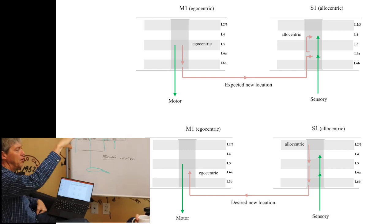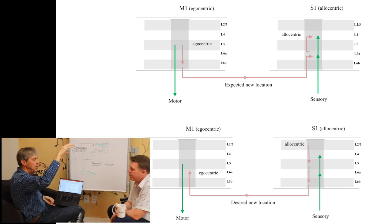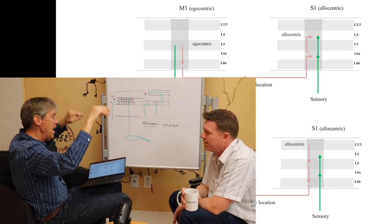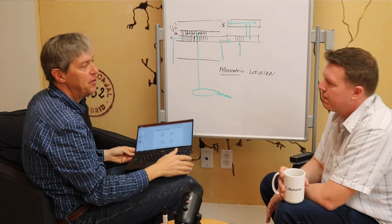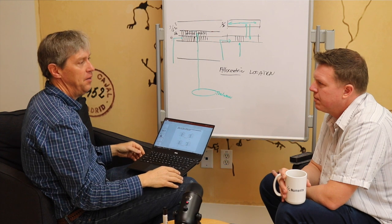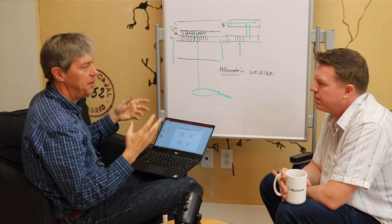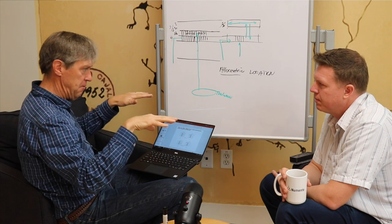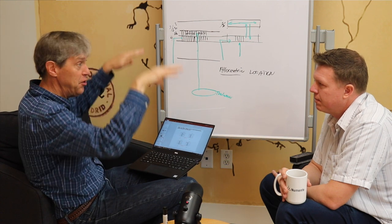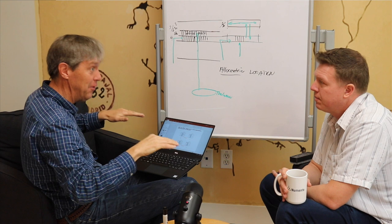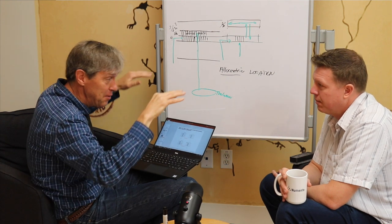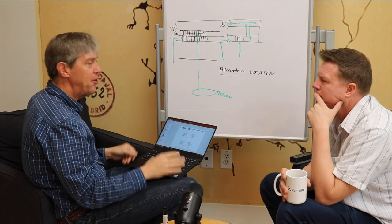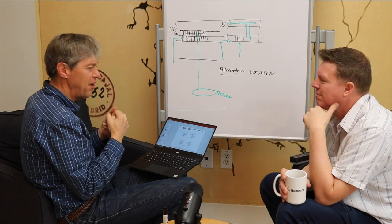Imagine a hierarchy going up — region, region, region. Well, there are actually two parallel hierarchies. One's called — this was first discovered in vision — the ventral and the dorsal stream. But the terms 'what' and 'where' capture the idea nicely. There seem to be two parallel vision streams, two parallel auditory streams, and two parallel somatosensory or touch streams.